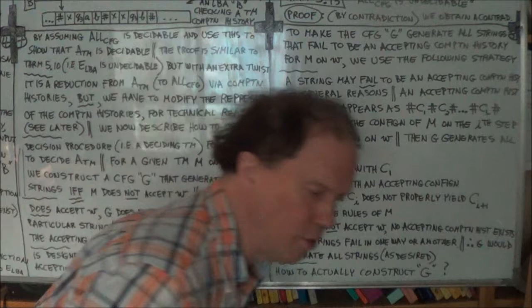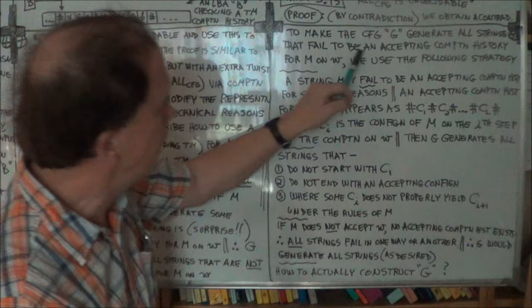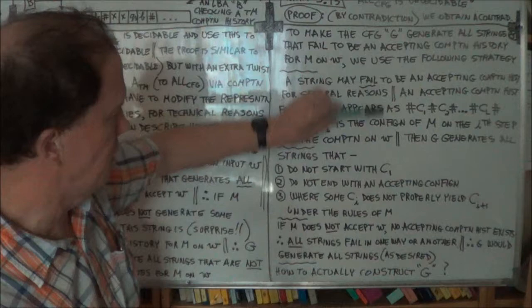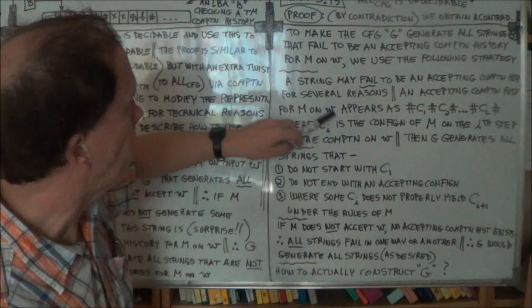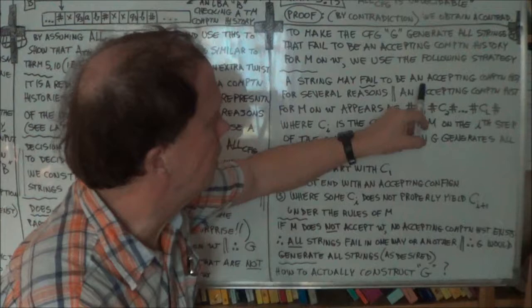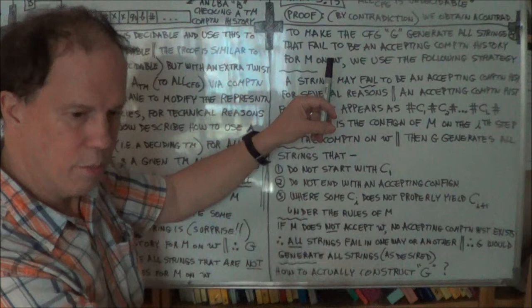There's only one accepting computation history anyway, so this G is generating all strings except that one string — and that's the heart of the proof, we can really use that. To make grammar G generate all strings that fail to be an accepting computation history, we use the following strategy. How can a string fail to be an accepting computation history? Because this is what G is doing — it's generating all strings that fail to be of that type: accepting computation histories.